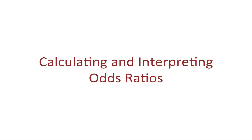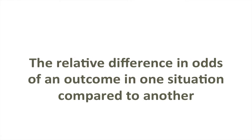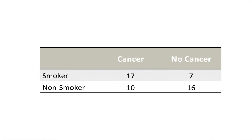I wanted to start with a definition. Odds ratios are about categorical outcomes and the relative difference in the odds of an outcome occurring in one situation compared to another, or for one group of participants compared to another. This is the data we looked at in the chi-square video, because we can calculate an odds ratio for a chi-square test to quantify the size of a significant effect.